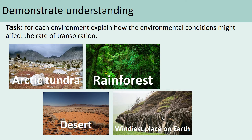Now we're going to apply those ideas to four different environments: the arctic tundra, a rainforest, a desert, and the windiest place on Earth. For each environment, explain how the environmental conditions will affect the rate of transpiration. Think about each condition — light intensity, humidity, temperature, and airflow — and say whether you think the rate of transpiration will be greater or less. This will take several minutes, so pause the video, write down each environment, and say how it affects the rate of transpiration.